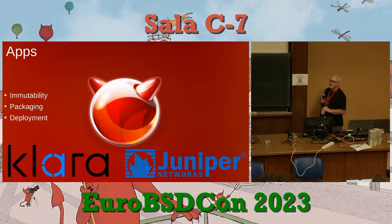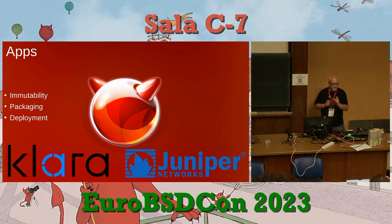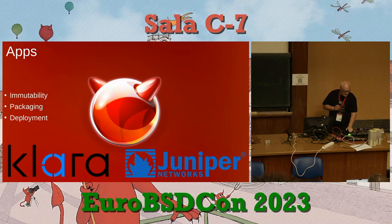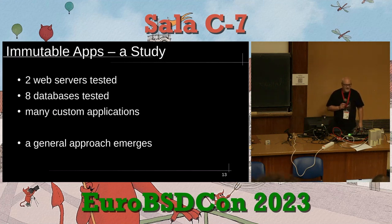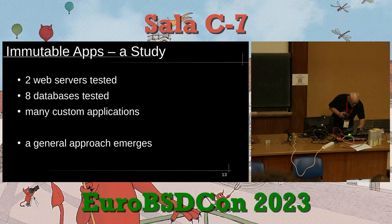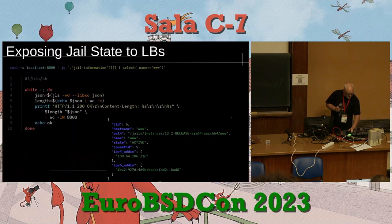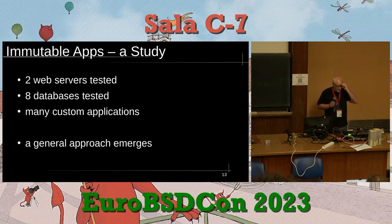Now we're looking at applications — this is where we really start examining immutability: what can we get rid of, how can we simplify, how can we remove things that could break? Over the last few years we've tested two web servers, eight databases, and many customer applications.